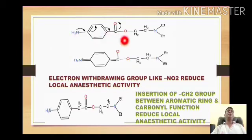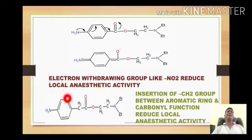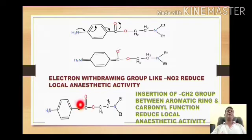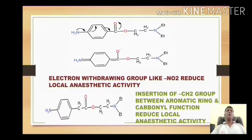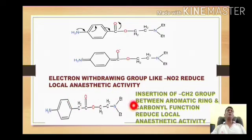That is why procaine has very good local anesthetic activity. If electron-withdrawing groups like nitro groups are attached to the aromatic ring, there is a decrease or complete removal of local anesthetic activity. Similarly, if a methylene group is inserted between the aromatic group and the carbonyl group, such modification leads to reduction or complete diminishing of local anesthetic activity. Both electron-withdrawing groups and methylene group insertion produce compounds with very little or no local anesthetic activity.